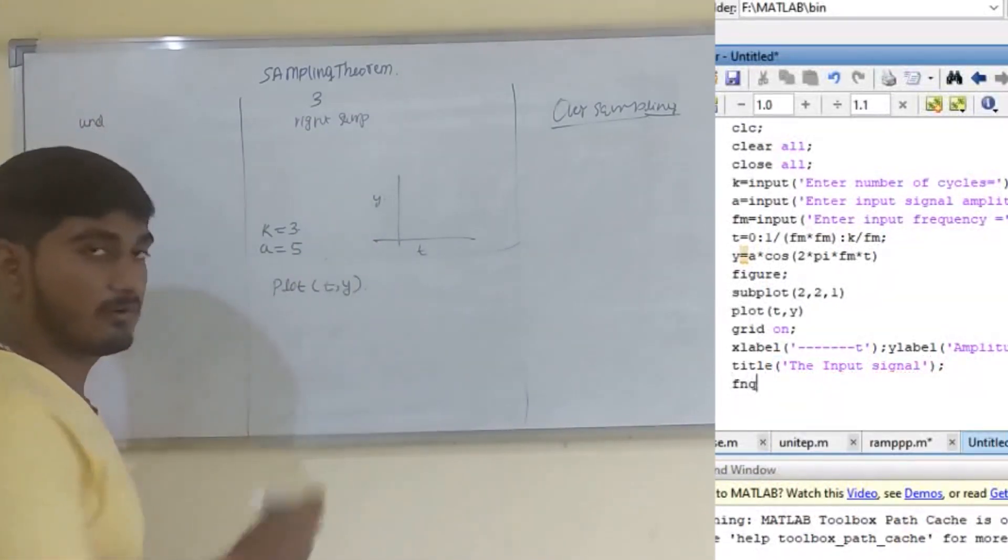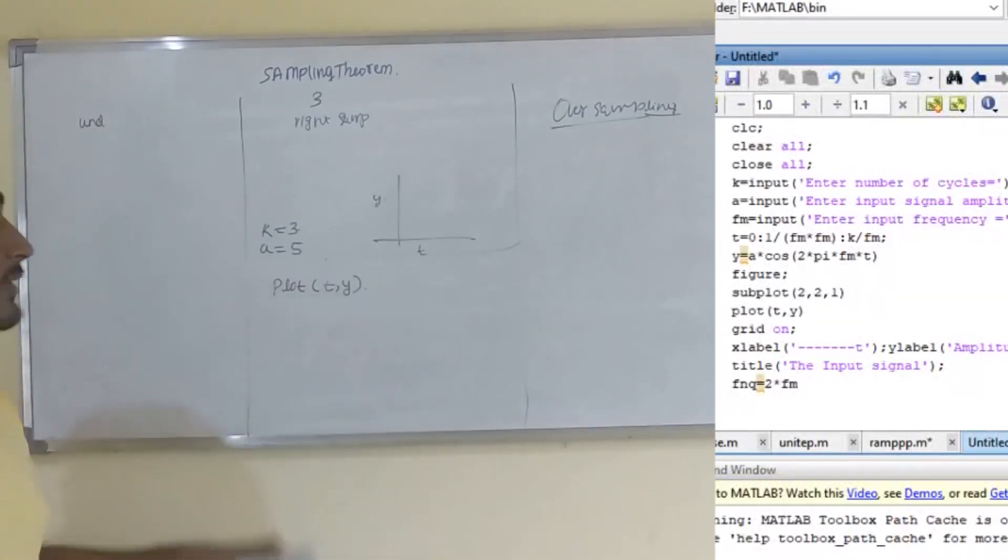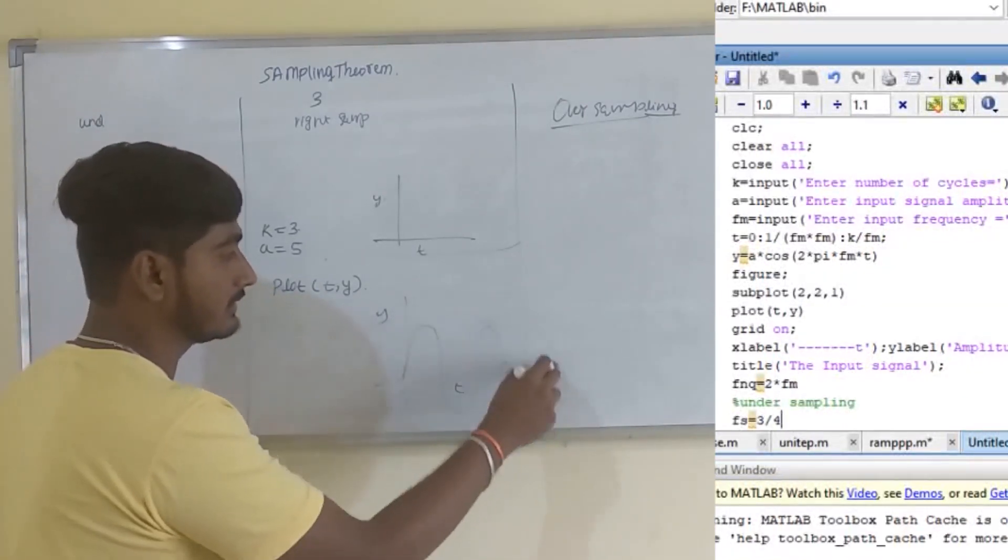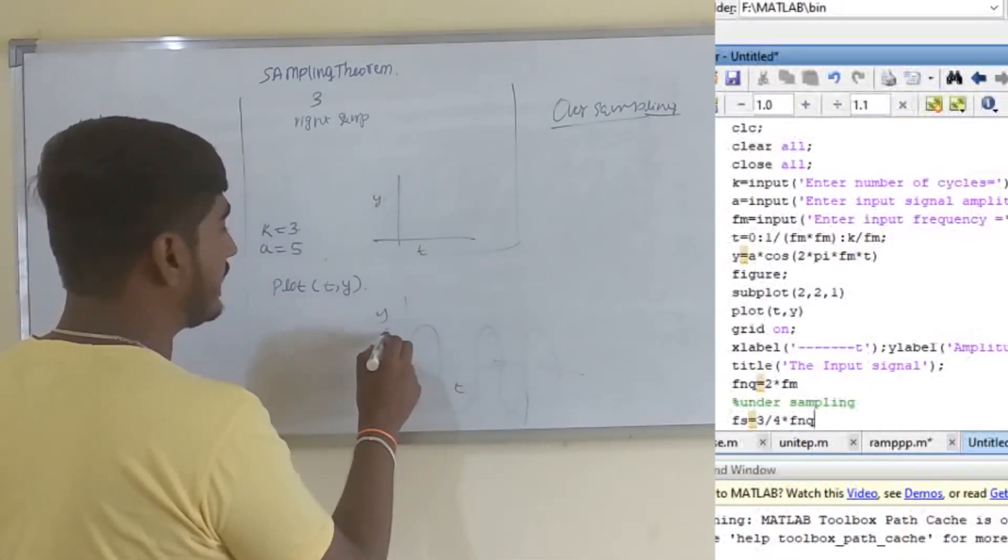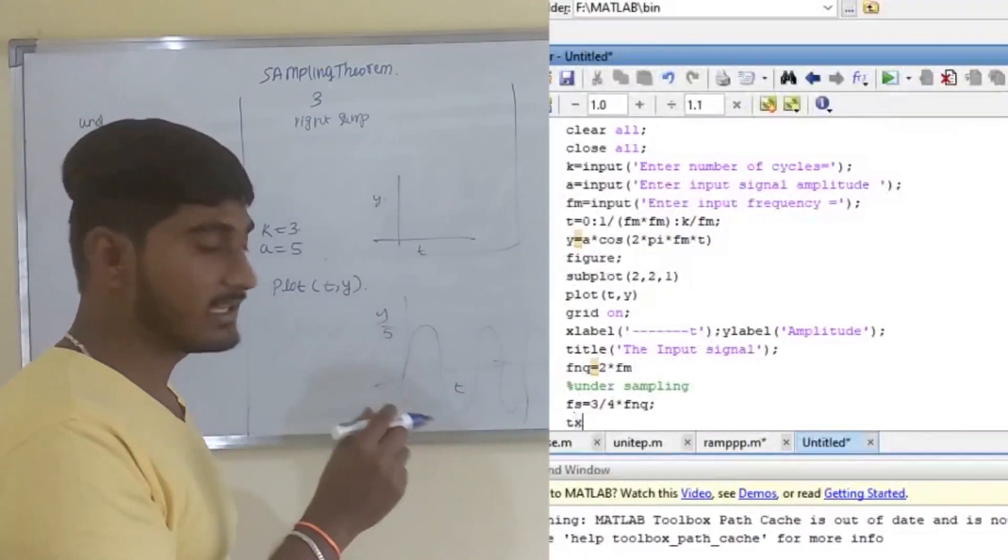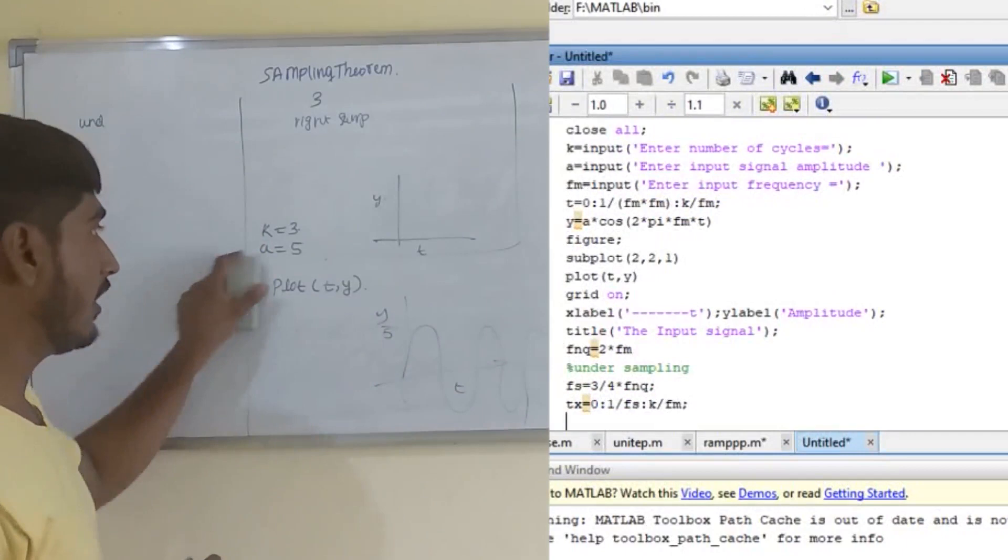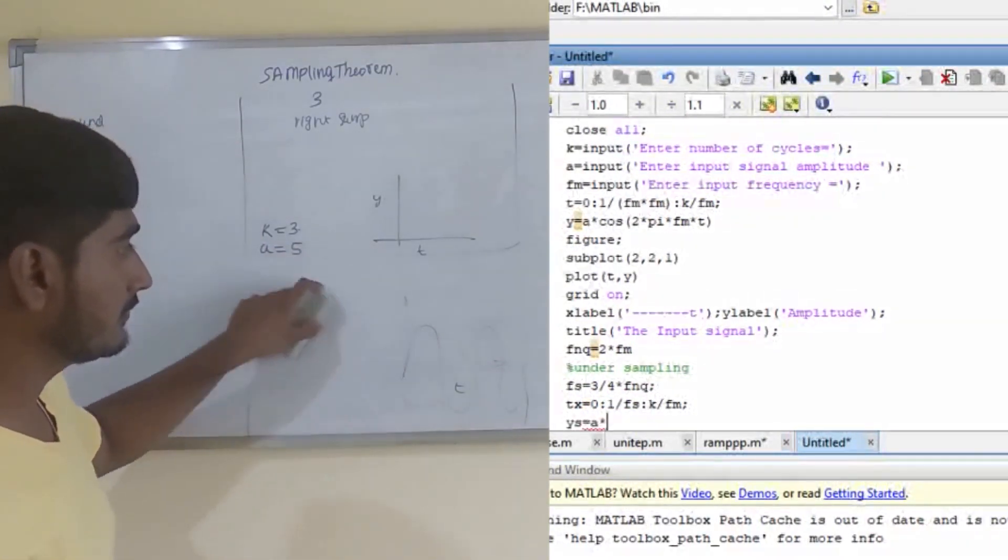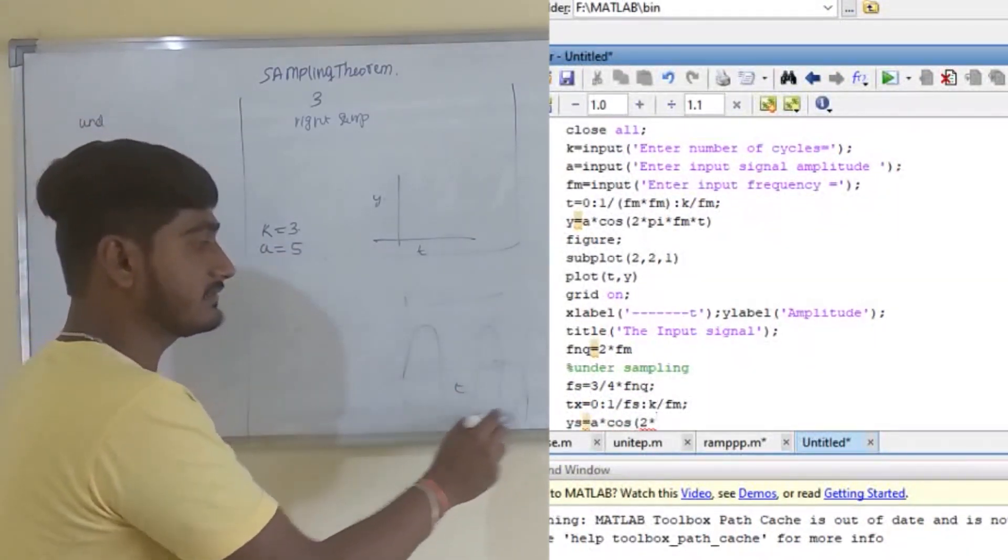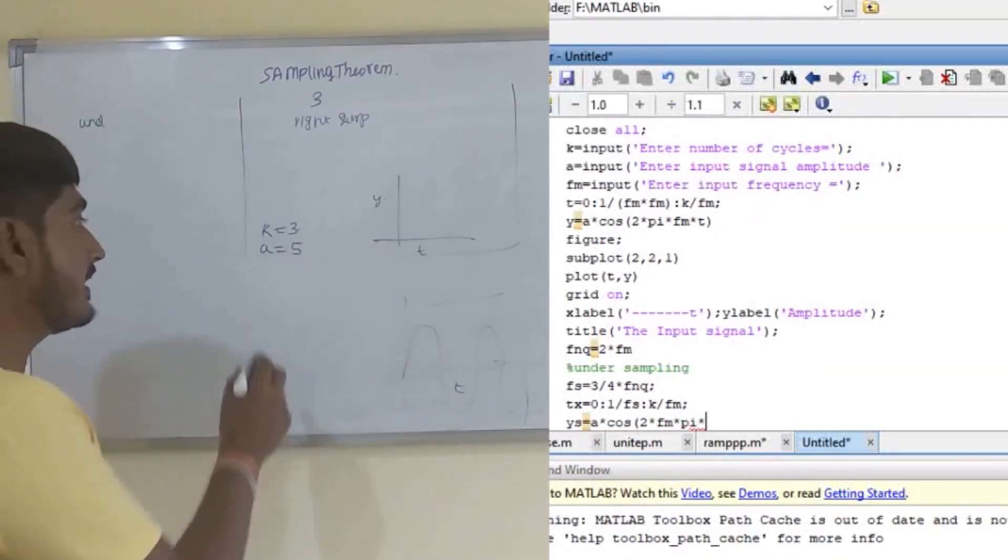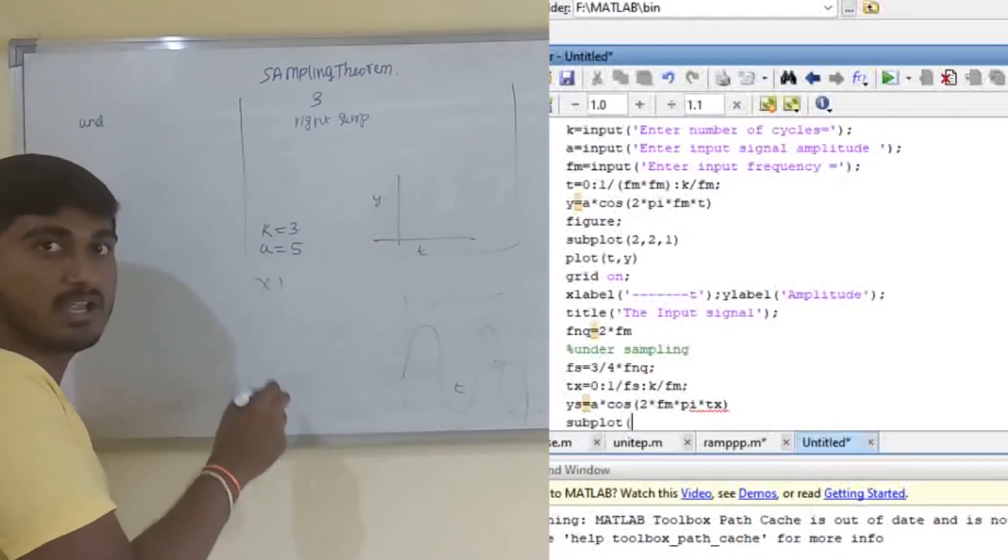This value will be stored in Y. We have the value of T as already shown in T and in Y, this calculated value. To plot T, Y, as soon as we plot, there will be a graph plotted in such a way that T, Y with an input signal of amplitude 5 and cycles 3. After the plot, we need to label X axis, Y axis, and input signal.